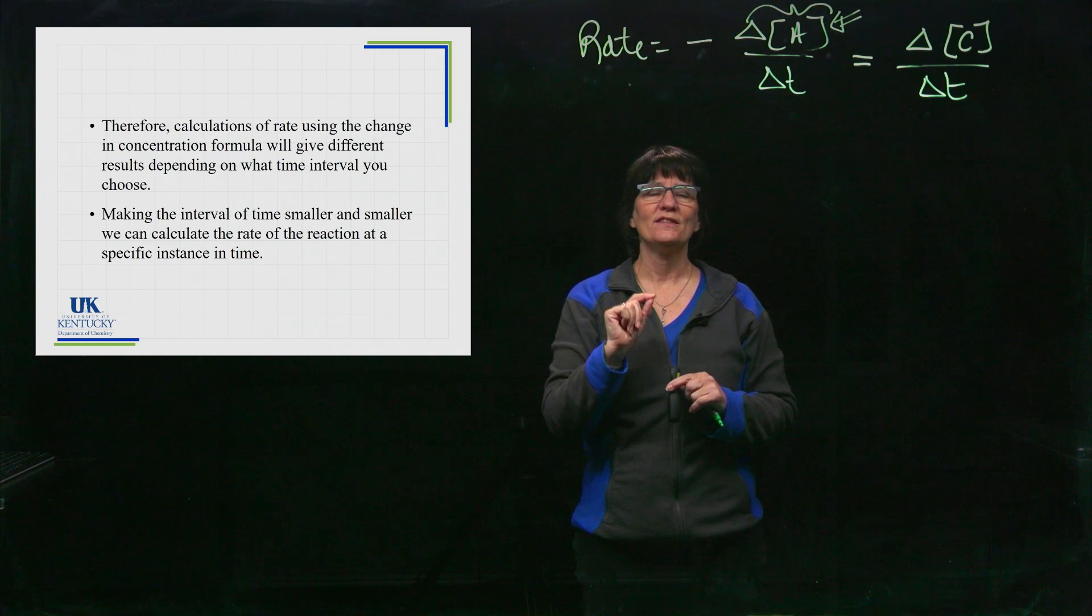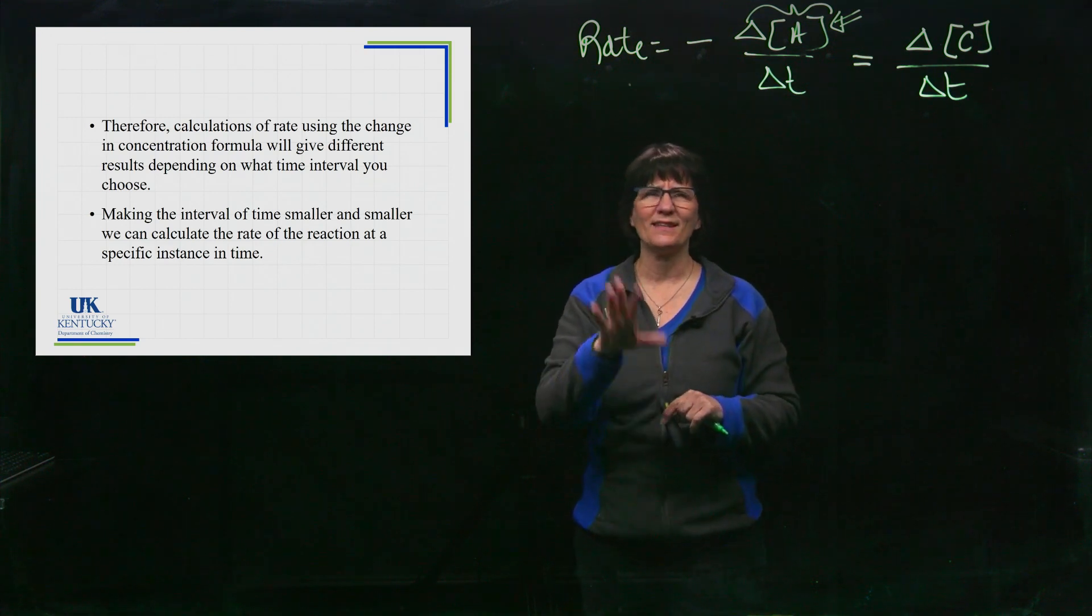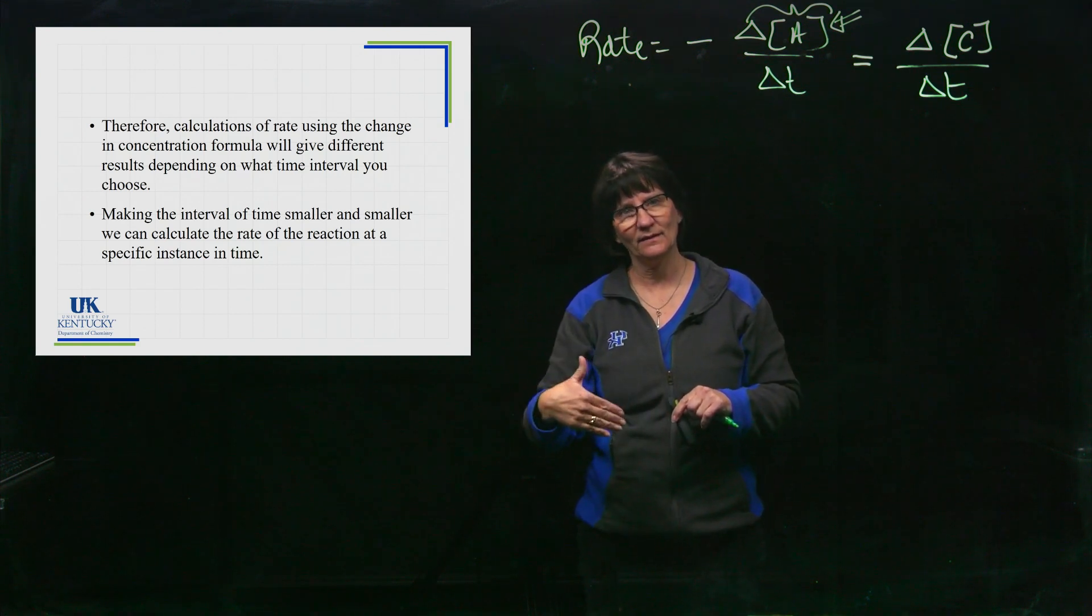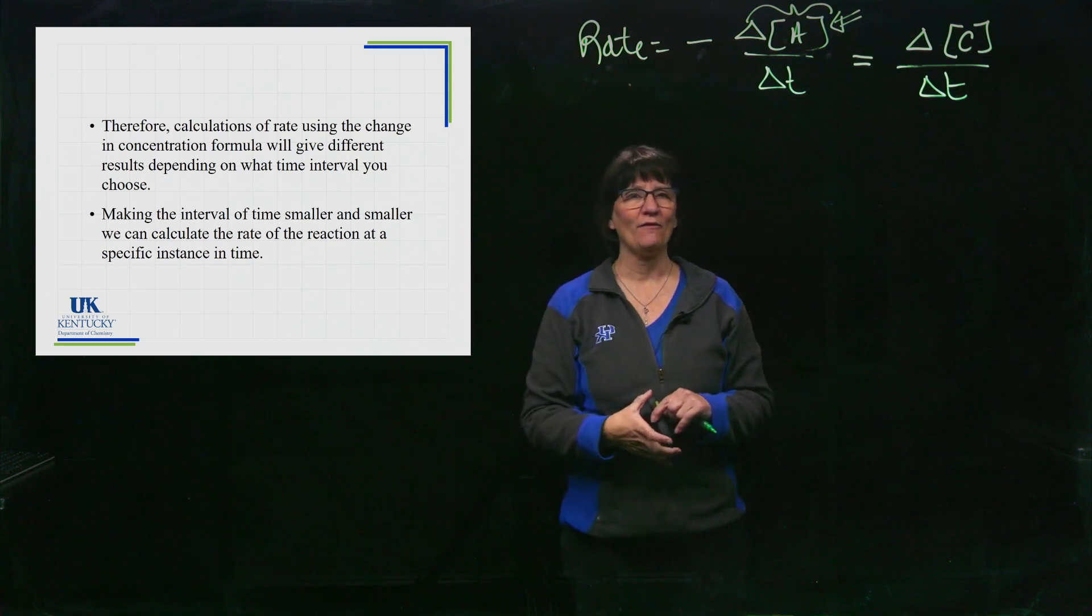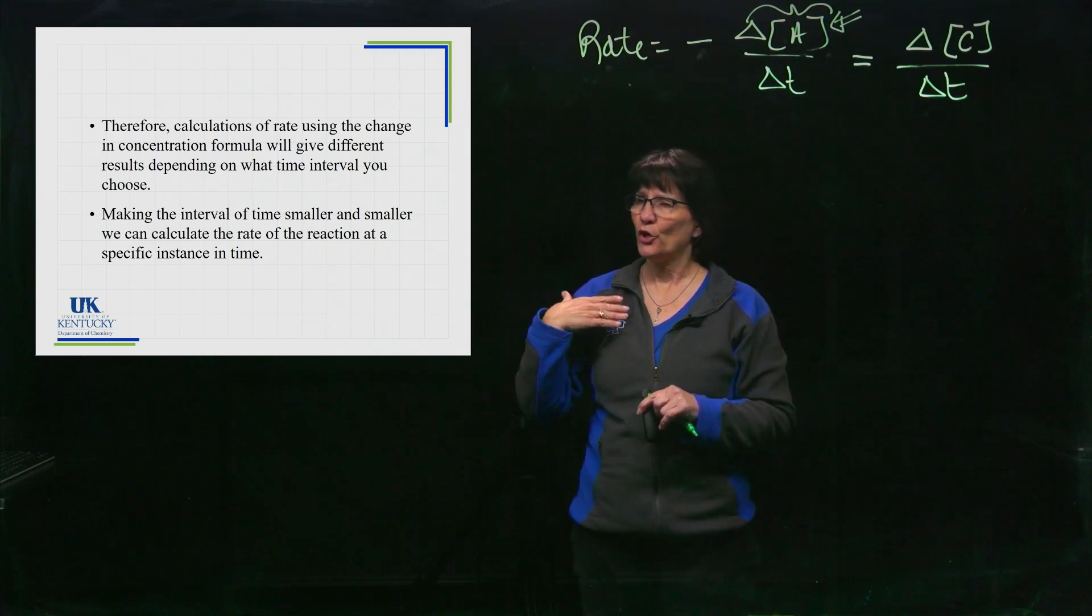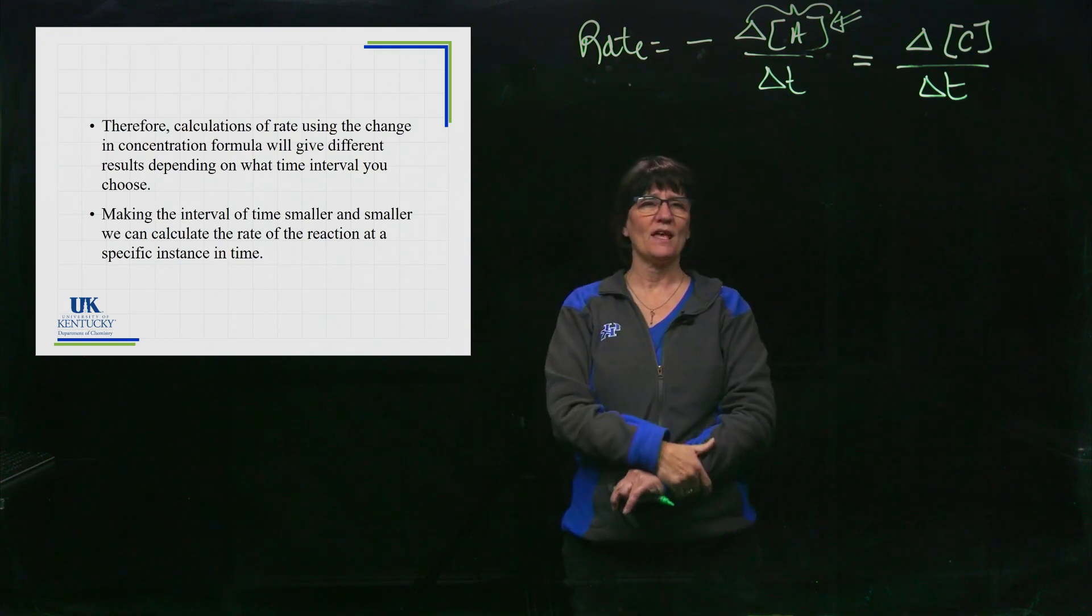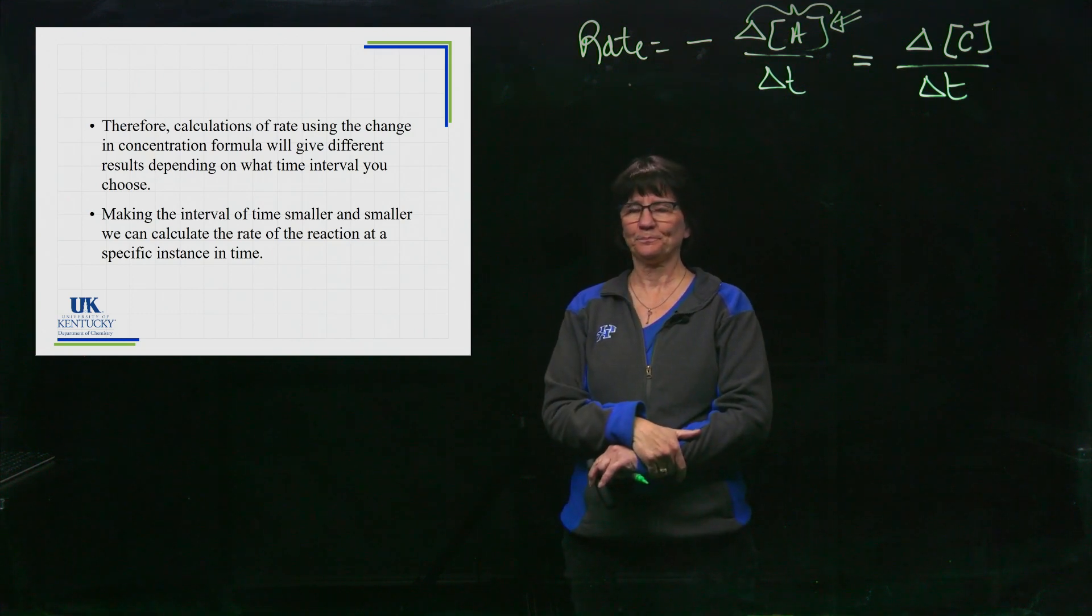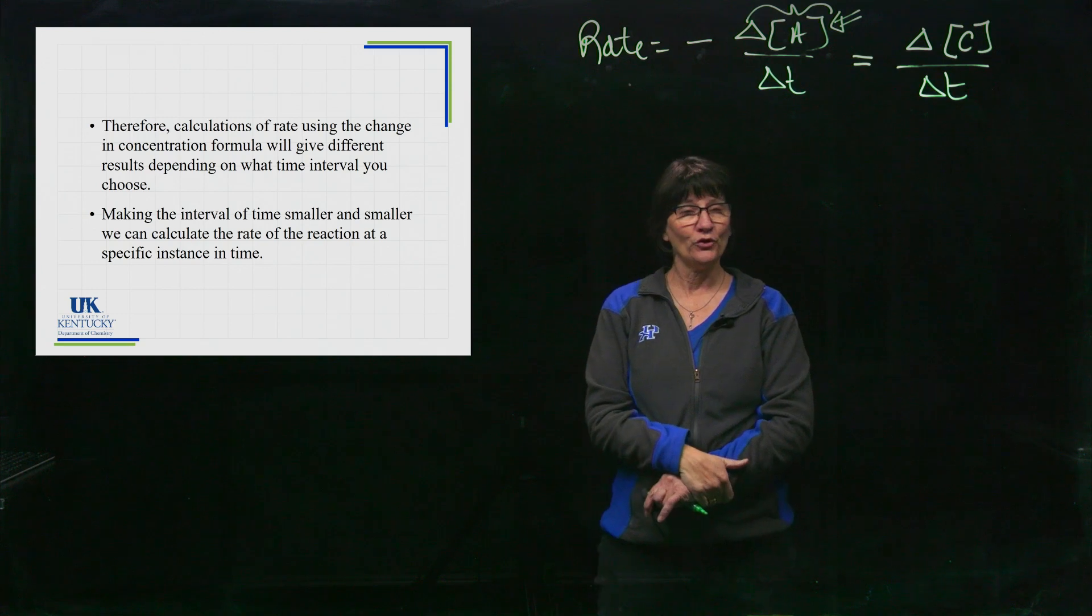Let me give you an analogy that's not chemistry. You could be traveling between here, Lexington, to Cincinnati, and you could on average be traveling 70 miles an hour. So you go the distance, you divide by the time it took you to do that distance, and you come up with 70 miles an hour, you're going fine within the speed limit.